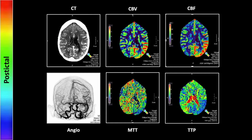Our last case is a post-ictal patient where the left temporal occipital region is apparently the focus of recent seizure activity. You can see even a little prominence of the vessels on the contrasted CT in that region, and that is manifesting as increased cerebral blood volume and increased cerebral blood flow. So certainly that is not the typical appearance of an infarct, although it is notably asymmetric and regionally prominent. The MTT and the TTP are both depressed here, which may represent the effects of regional autoregulation. On the angio, you can also see the prominent vessels on that left side in the early venous return.